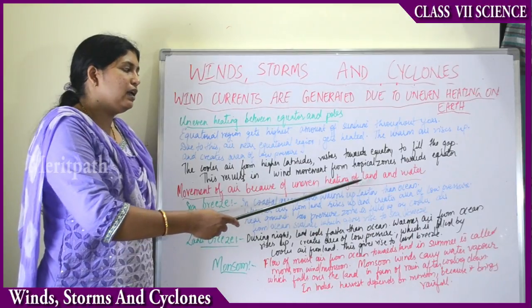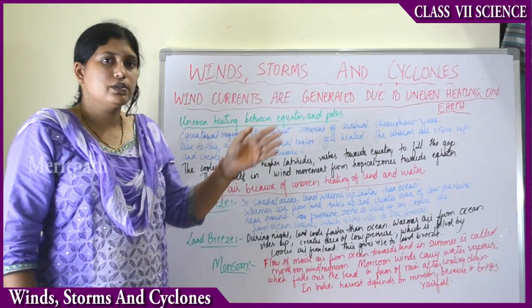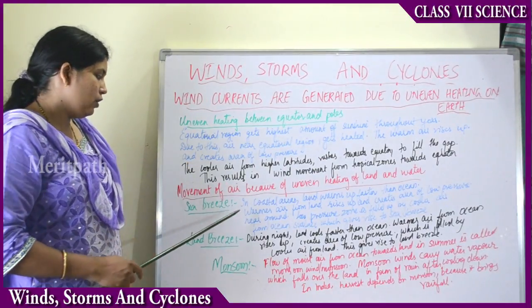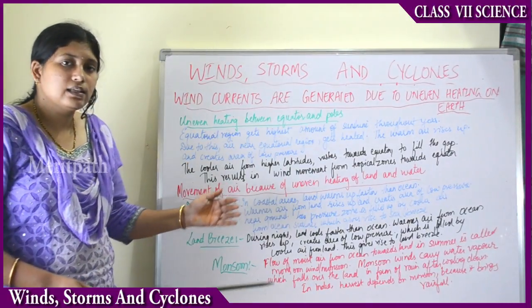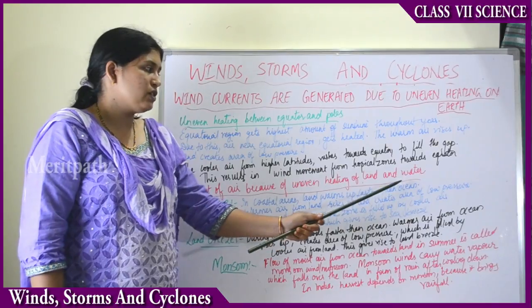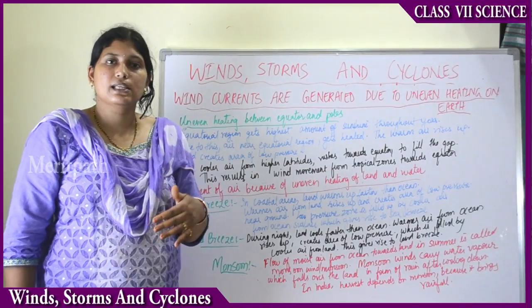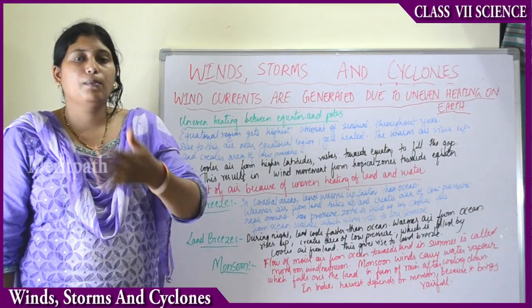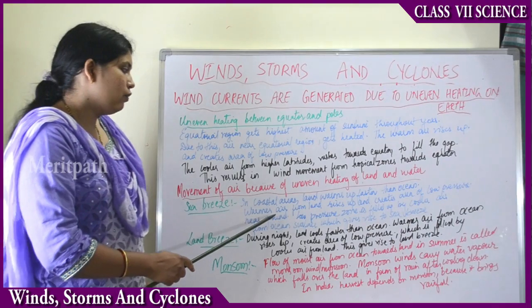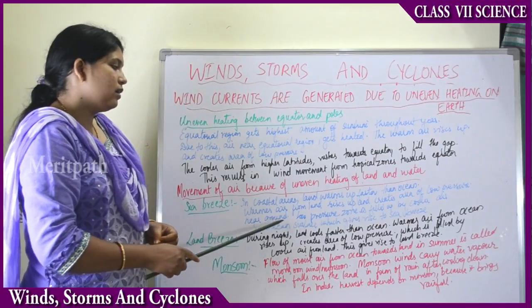Now we look at uneven heating of land and water. In coastal areas near the sea, during daytime, land warms up faster than the ocean. The air above the land gets heated faster than the air above the ocean. This warmer air from the land rises up and creates an area of low pressure near the ground.